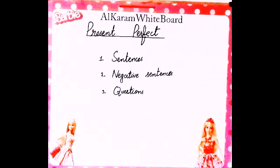Assalamualaikum everyone. I hope you all are well and healthy. In this video we learn about Present Perfect Tense. Present Perfect Tense kya hota hai? Present Perfect Tense three types mein divide hai. Jab hum koi bhi sentence karte hain, woh three types mein divide hota hai: sabse pahle simple jumla, uske baad negative sentences yani manfi jumla, aur questions yani sawal. Inke baare mein hum detail mein dekhte hain.